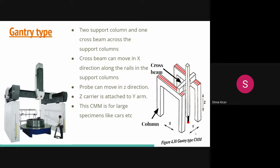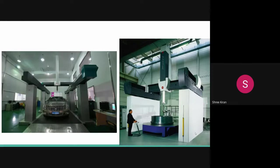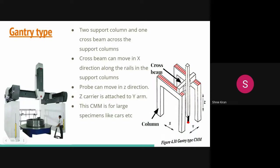Gantry measuring machines are large and built with a very solid structure. They are used for measurements of very large parts in system manufacturing and heavy machine construction. They are also used in measuring car bodies and wind tunnel models.